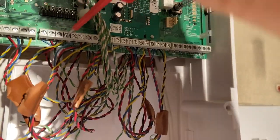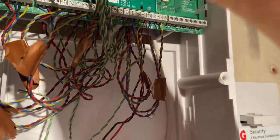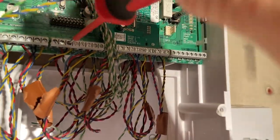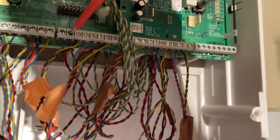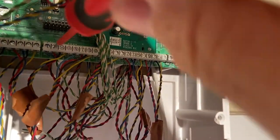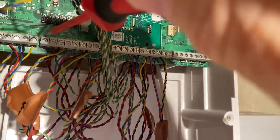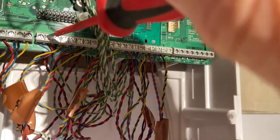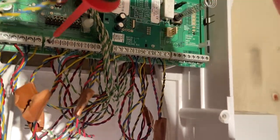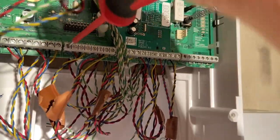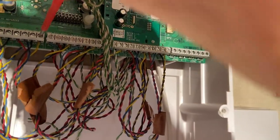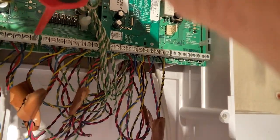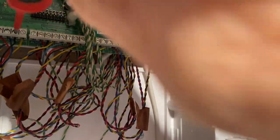The way you silence the Texecom bells is to drop the strobe down to zero volts and hit it six times quite quickly. So you drop it to zero volts six times and that will put the sounder into engineer mode.